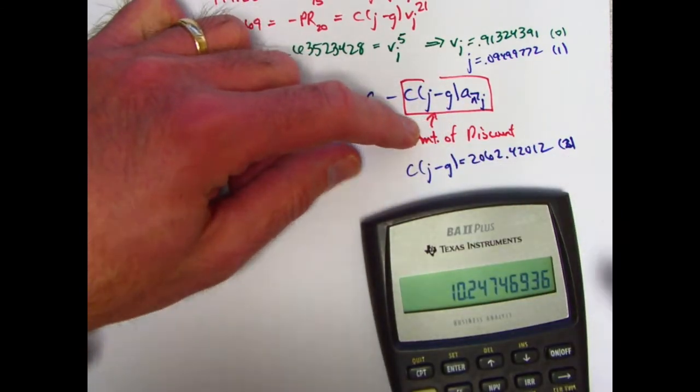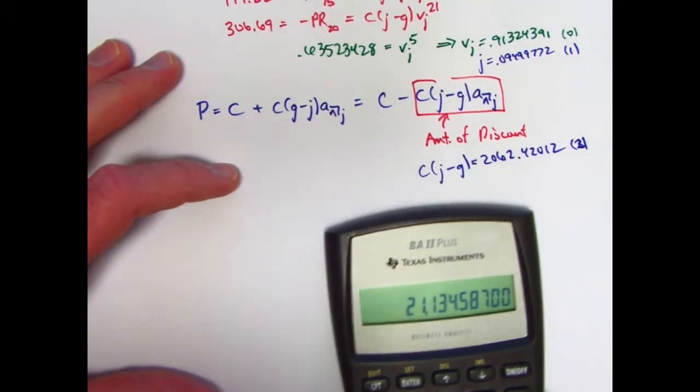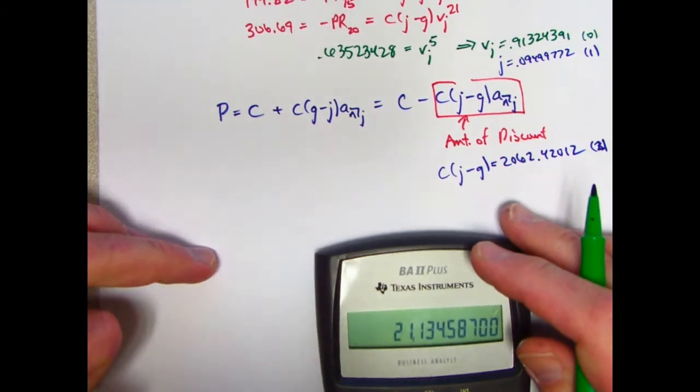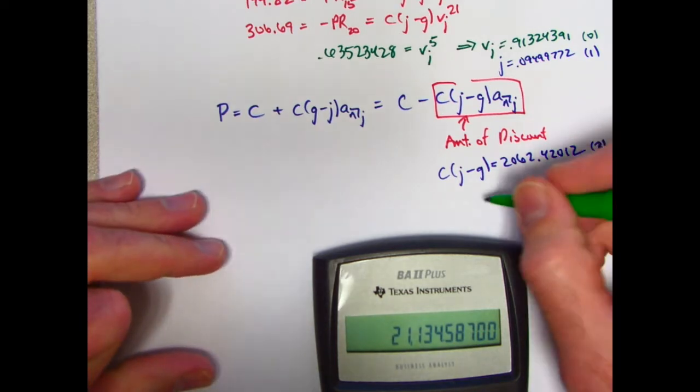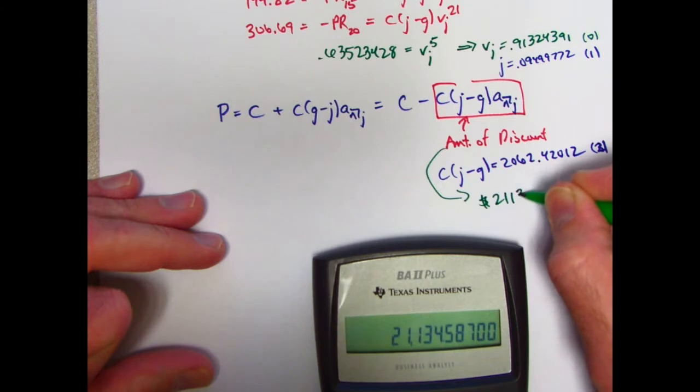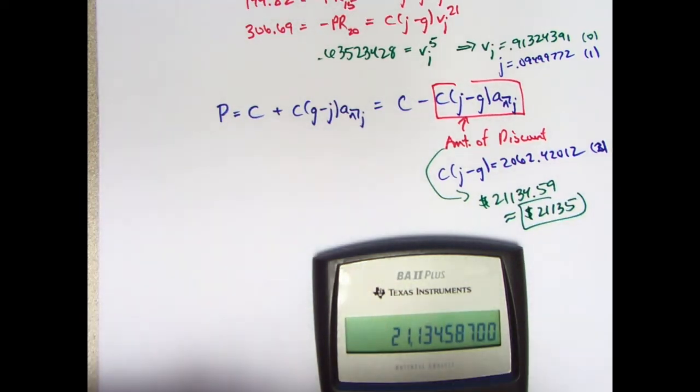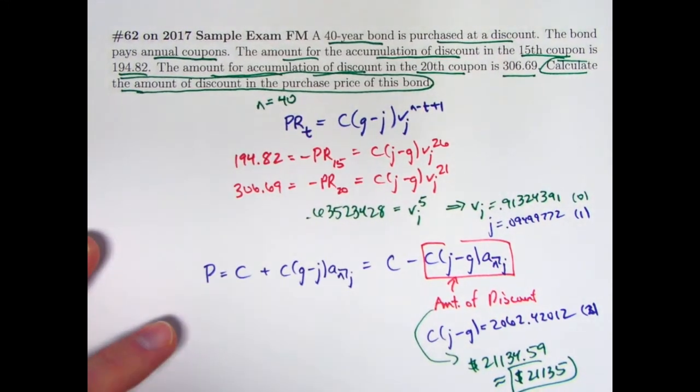Now just multiply that by what's in register 2. The answer is kind of big for a bond problem, but it is the correct answer, and it is one of the options on that sample exam from 2017, problem 62. It is choice E, that the amount of discount is 21,134.59, and this gets rounded to 21,135 on the sample exam. Okay, that is the correct answer. Here again was the problem, if you want to look at it again. Thank you.